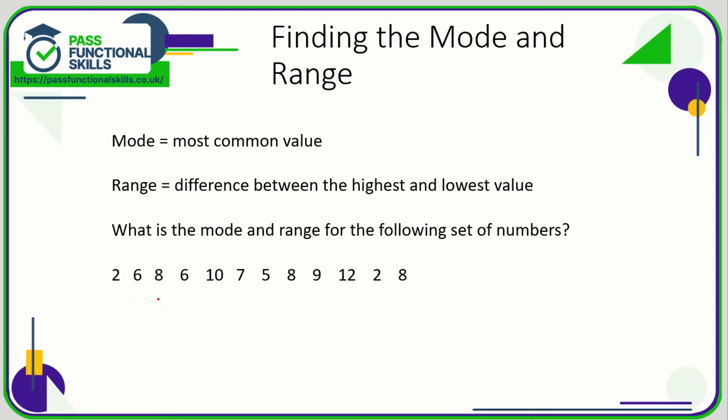So the mode for this data set is 8, because 8 appears 3 times, which is more than any other number. So the mode is 8. And the range is the difference between 2, which is the lowest, and 12. 12 take away 2 is 10, so there's a range of 10.